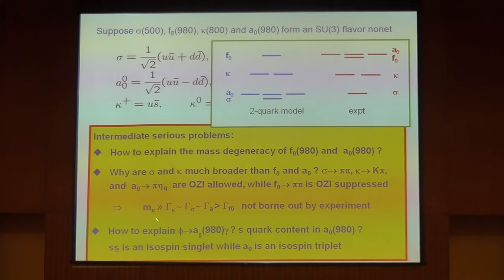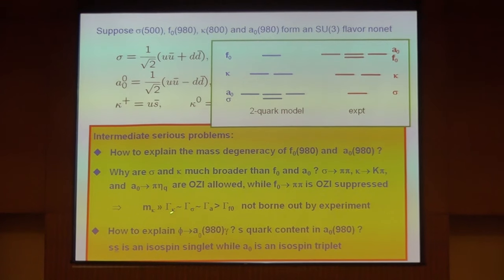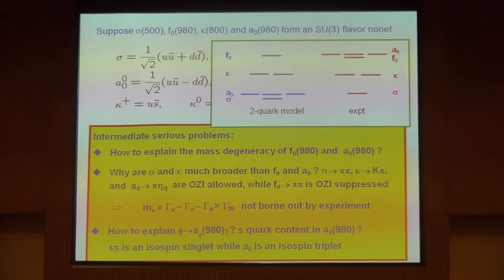It's extremely difficult to understand the hierarchy of the decay widths. Also we don't understand the rate of decay of phi to a₀ and gamma, because if a₀ has no strange quark, then a₀ cannot have mixing with the strange quark.